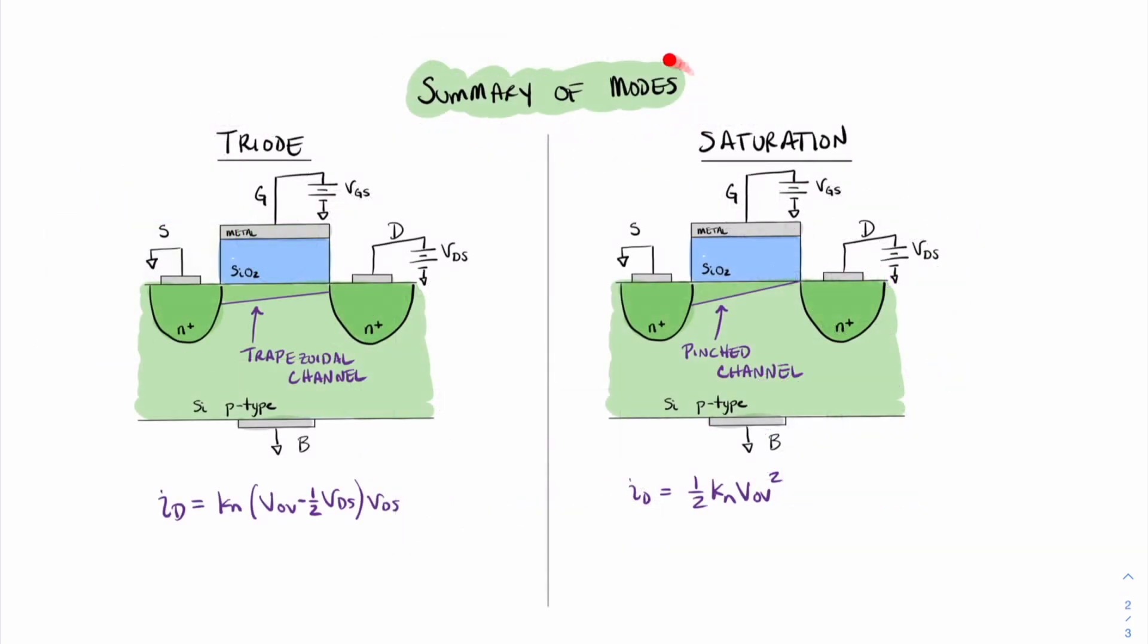To summarize, we have determined that there are two modes of operation in which current flows from drain to source. The first mode is triode mode. This mode is known because of the trapezoidal shape of the channel. And looking at the trapezoidal shape of the channel, we were able to determine an equation for the current. That is, ID equals KN VOV minus one-half VDS quantity times VDS.